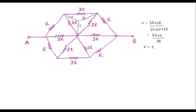Similarly, Y is also equal to 3R × 3R divided by the same denominator, and Z is also 3R × 3R divided by the same. So the values of X, Y, and Z are the same — that is R. Similarly, this other structure is also 3R, 3R, 3R connected in delta fashion.